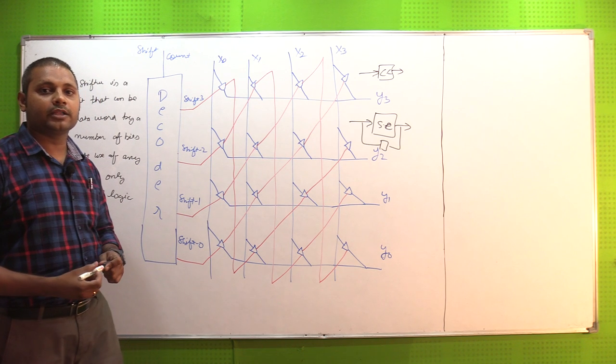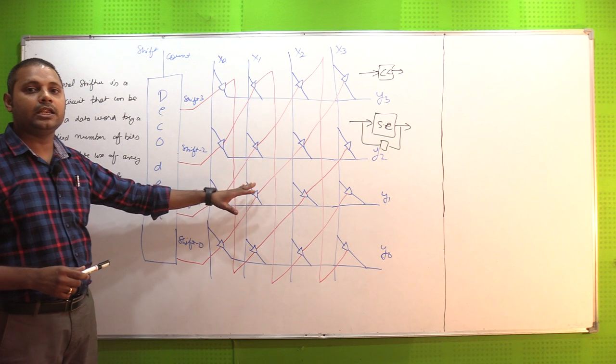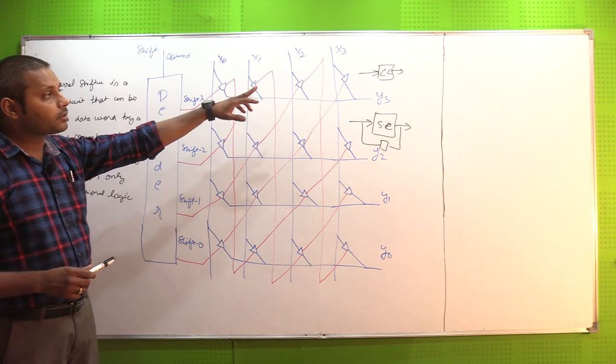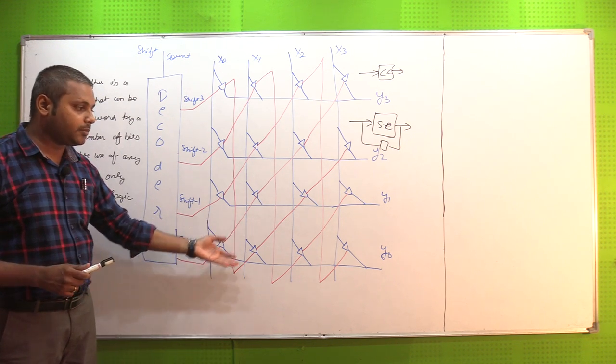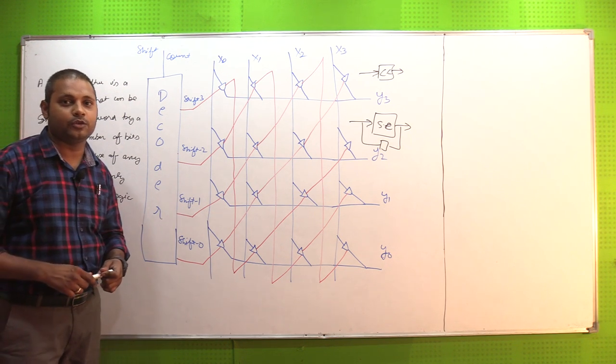Here we are only using pure combinational logic. So here we can explain, this is all about barrel shifter, thank you.